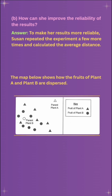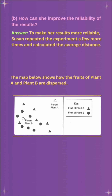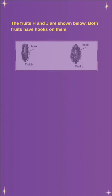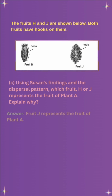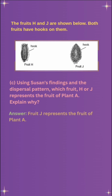Answer: To make her results more reliable, Susan repeated the experiment a few more times and calculated the average distance. Next, the map below shows how the fruits of Plant A and Plant B are dispersed. The fruits H and J are shown below — both fruits have hooks on them.